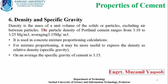The last property is density and specific gravity. Density is the mass of unit volume of solids or particles, excluding air between the particles. It is used in concrete mix proportioning calculations. It may be more useful to express density as relative density, which means specific gravity. The average specific gravity of cement is around 3.15 to 3.16.